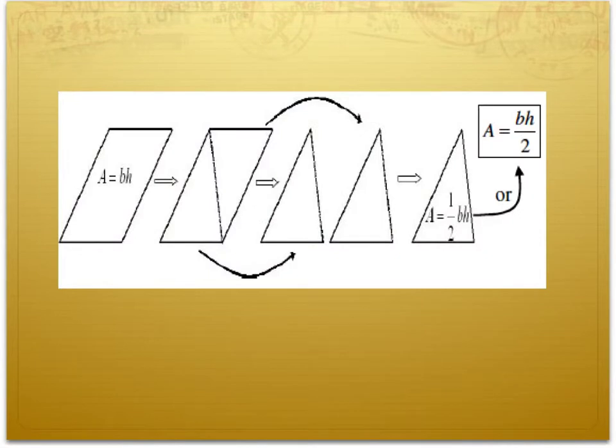The following image is a summary of what we've just learned. We now know that a parallelogram or a rectangle has an area equal to base times height, and that two triangles make up a parallelogram or a rectangle. So when we are calculating the area of one triangle, we multiply base by height and divide by 2.